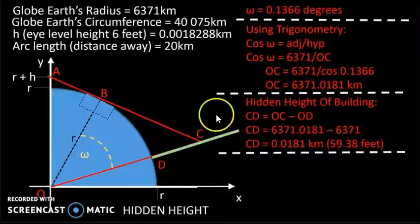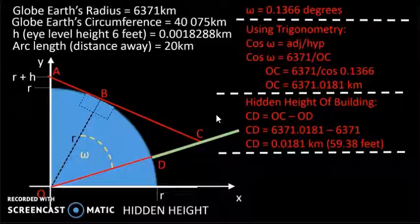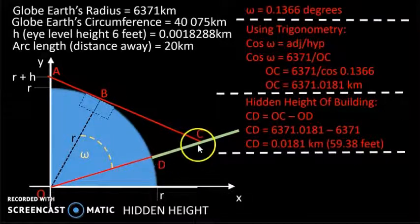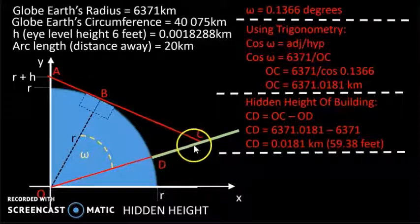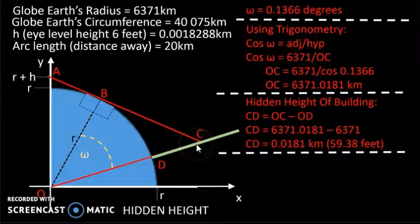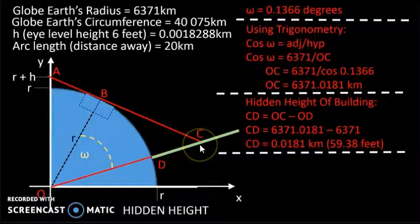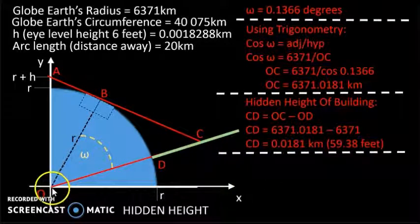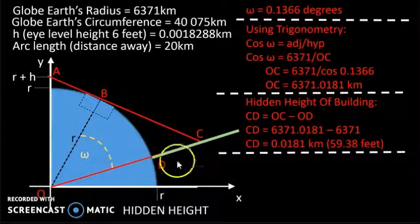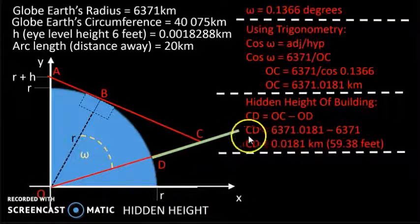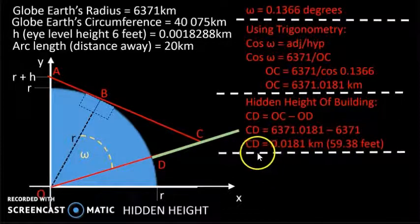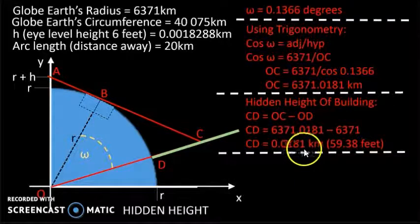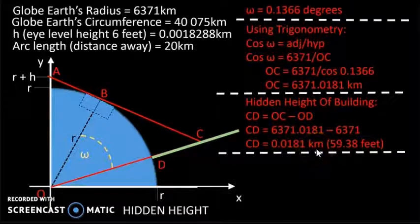We can now find the hidden height of the building. The hidden height is this distance here, C to D. This total distance OC we know, and this distance OD we know—that's the radius. So we simply subtract OD from OC. Once we carry out that subtraction, we get 0.0181 kilometres as our answer, and this is the equivalent of 59.38 feet.